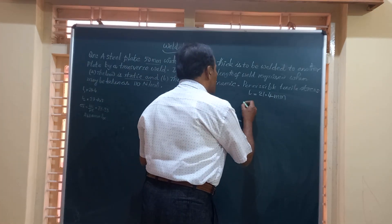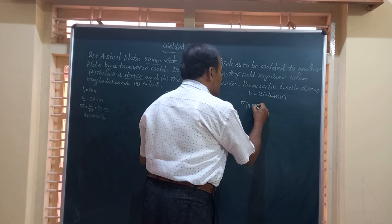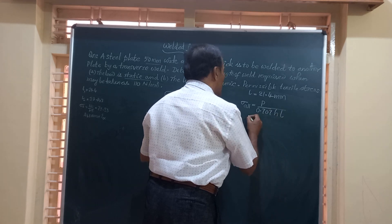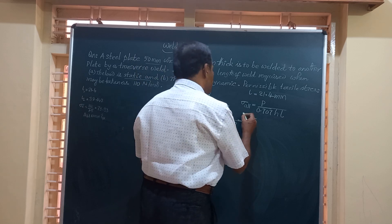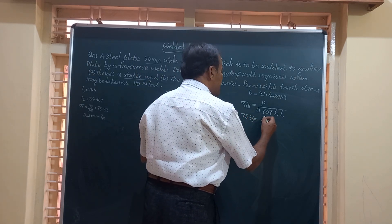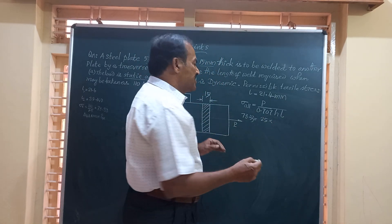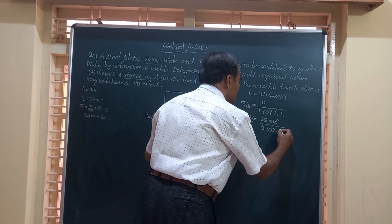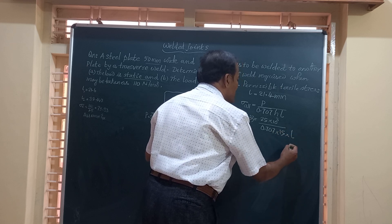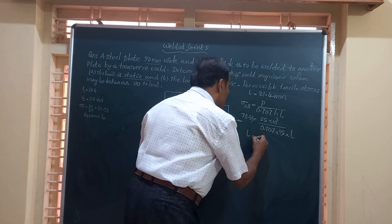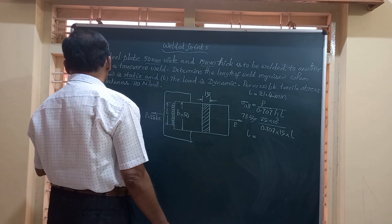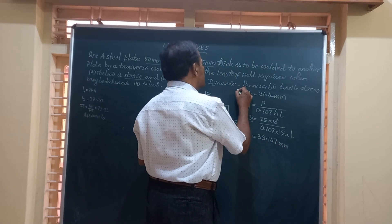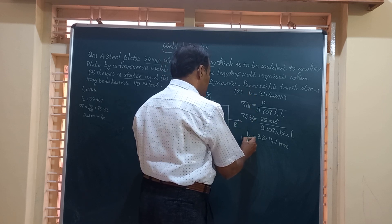For case two, we write: σ_allowable = P / (0.707 × H × L), where σ_allowable = 73.33 N/mm². Substituting: 73.33 = 25 × 10³ / (0.707 × 15 × L). Solving, we get L = 38.147mm. So for dynamic loading, L = 38.147mm.